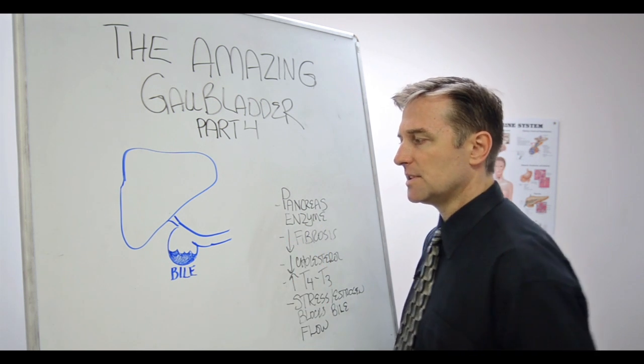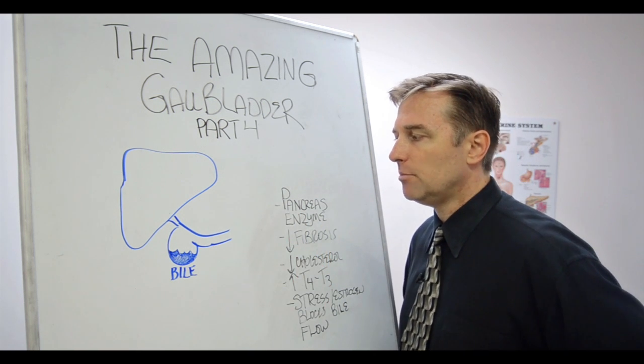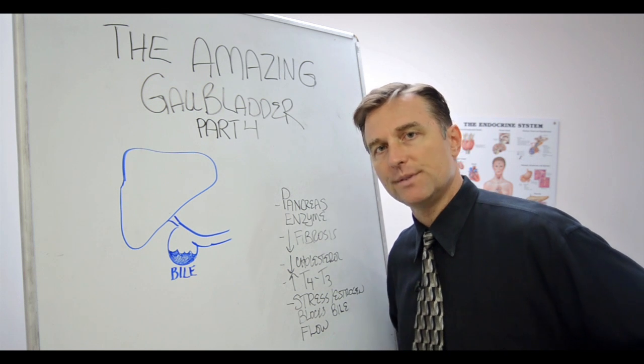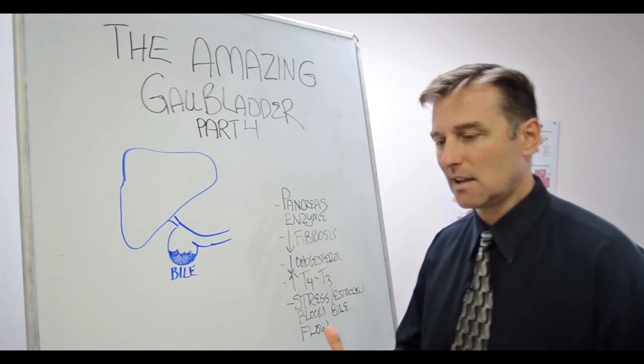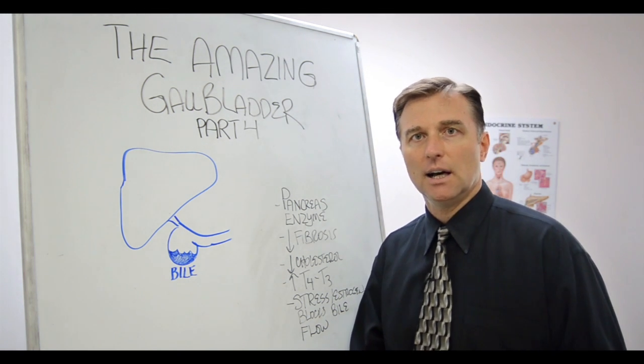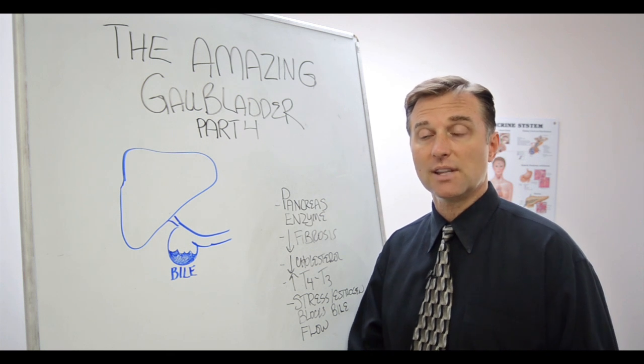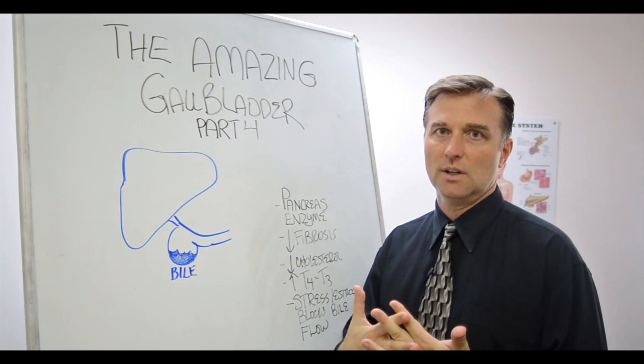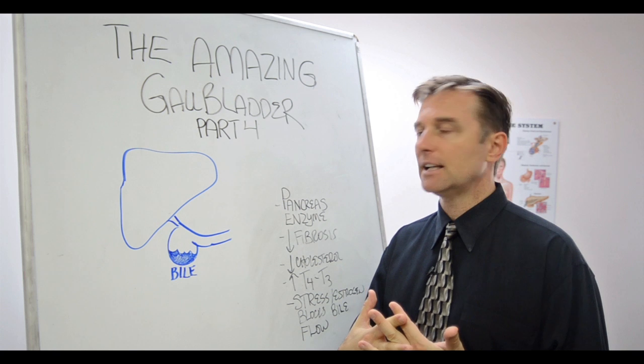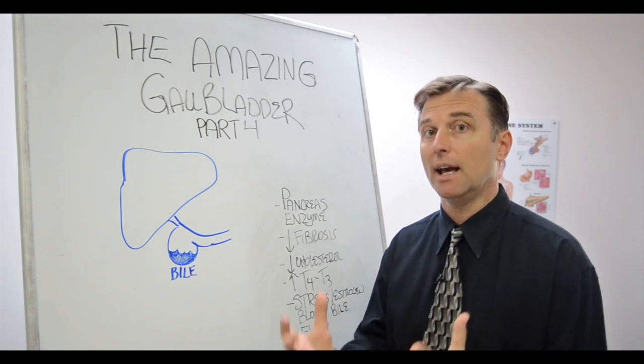Now, also, there's some studies that show that having enough bile will prevent fibrosis. Now, what is fibrosis? That's the scar tissue that builds up in the liver. Fibrosis of the soft tissues, that's like scar tissue. It's like connective tissue that just kind of plugs everything up.